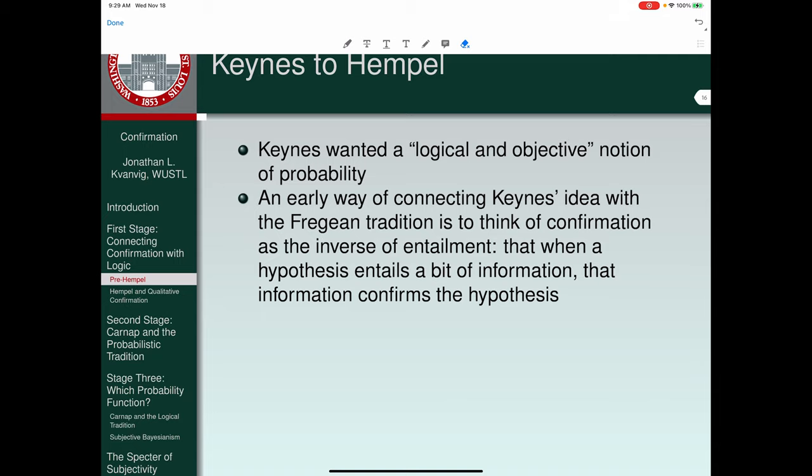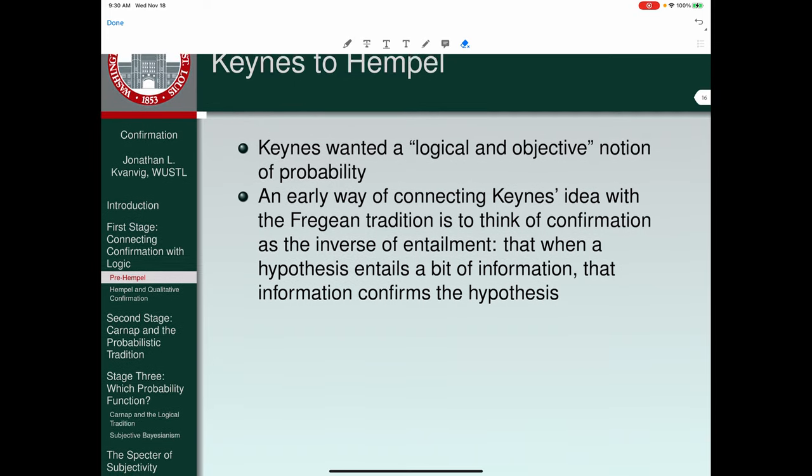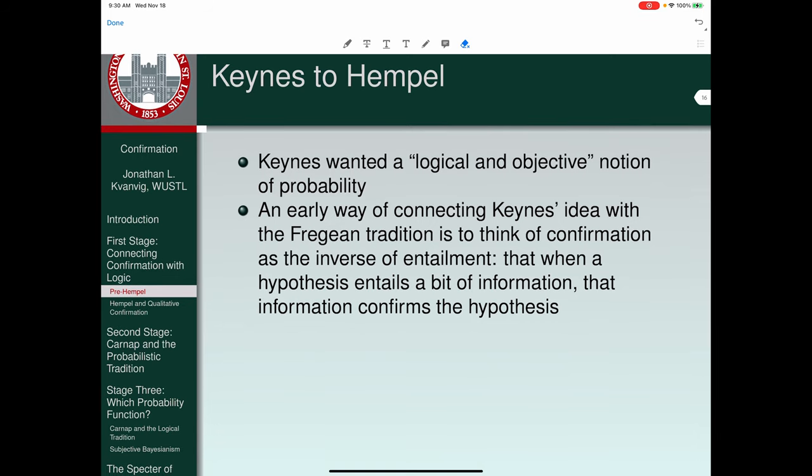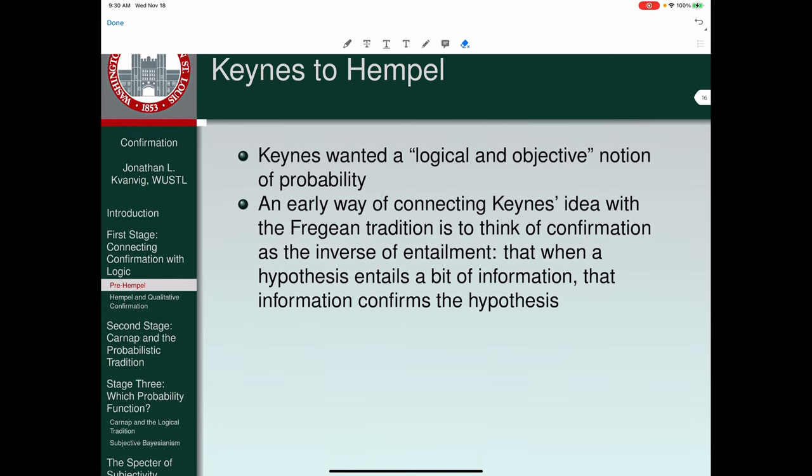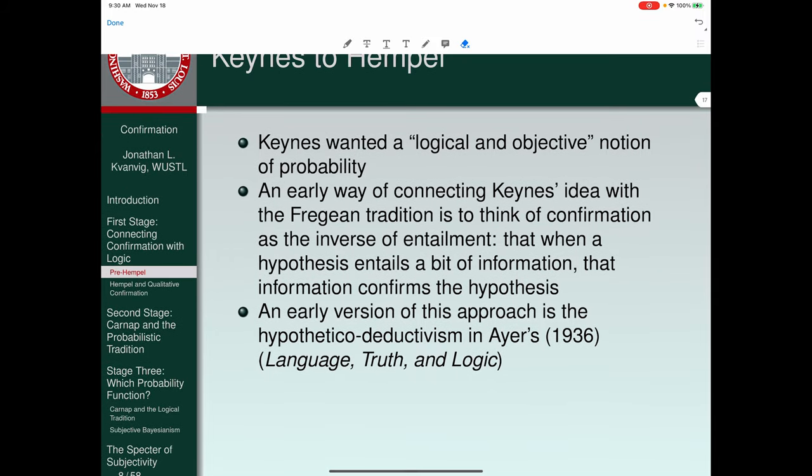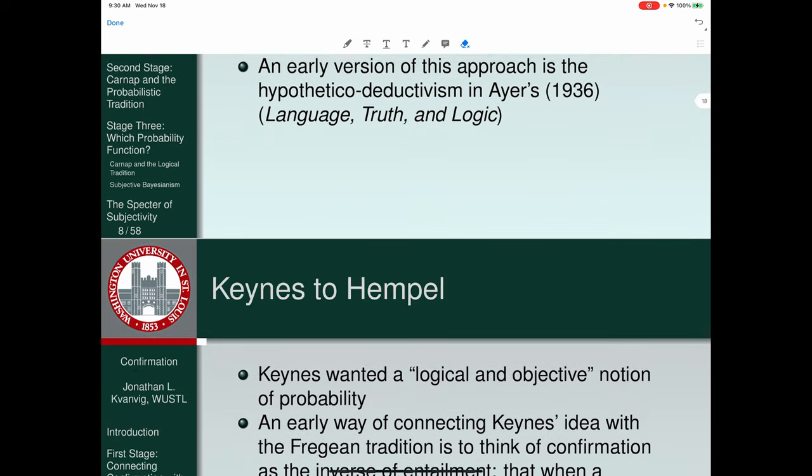So an early way of connecting Keynes' idea with the Fregean tradition is to think of confirmation as the inverse of entailment. That when a hypothesis entails a bit of information, that information confirms the hypothesis in question. Some people, me for example, have called this the high school understanding of confirmation theory. An early version of this approach is the hypothetical deductivism in Ayers' 1936 Language, Truth and Logic.